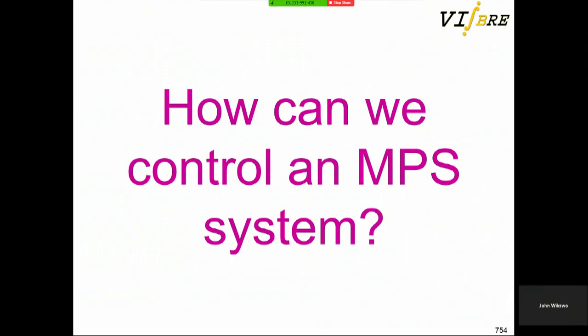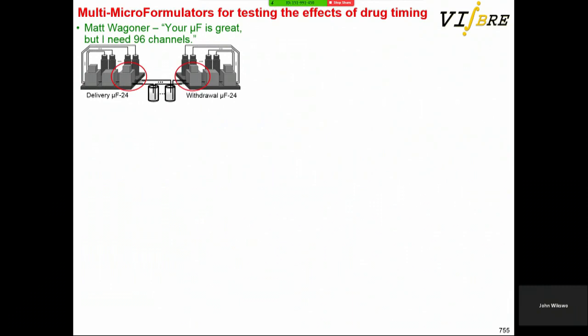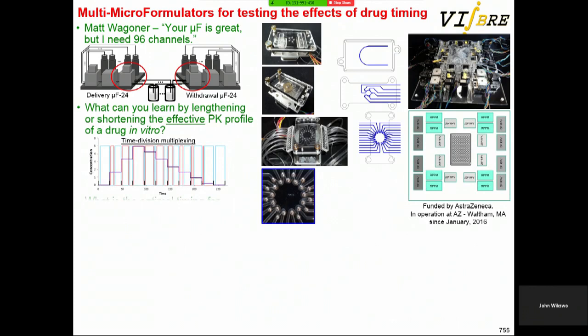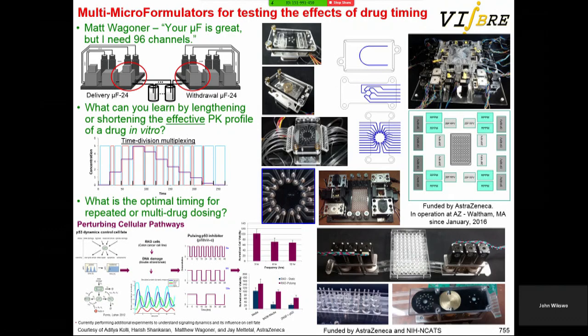We had the microformulator, which I talked about before. Matt Wagner saw it and said he wanted 96 of them, so we built a device called The Beast, now at AstraZeneca. After Matt left, AstraZeneca is continuing to look at adjustment of drug decay profiles — not through chemistry, but through fluidic control. We've delivered or are delivering other gadgets to AstraZeneca as well.